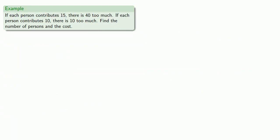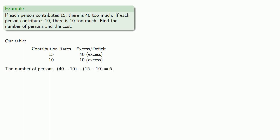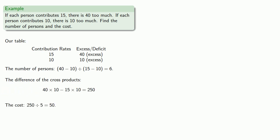Similarly, for a generous group where both rates yield excesses: if each person contributes 15 there are 40 coins too much; if each contributes 10 there are 10 too much. The number of persons is the difference in the excesses divided by the difference in the contribution rates, giving 6. We find the difference in the cross products — again taking only the non-negative difference — then divide by the difference in contribution rates to get the cost, 50.